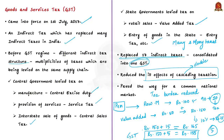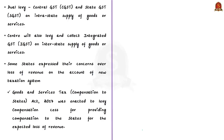All the taxes mentioned earlier are subsumed in a single tax called GST, levied on the supply of goods or services or both at each stage of the supply chain starting from manufacture or import until the last retail level. GST is a dual levy — the central government levies and collects Central GST, the state levies and collects State GST on intrastate supply, and the center also levies and collects Integrated GST (IGST) on interstate supply of goods or services.